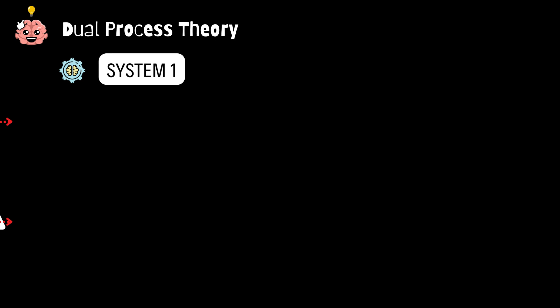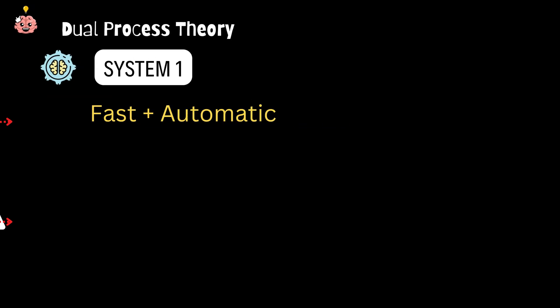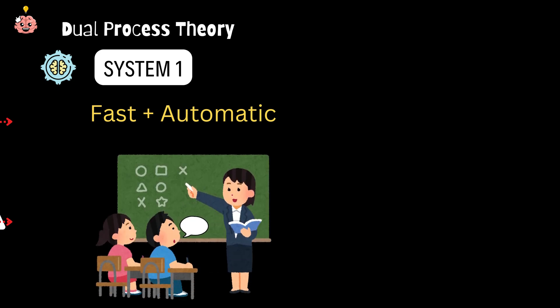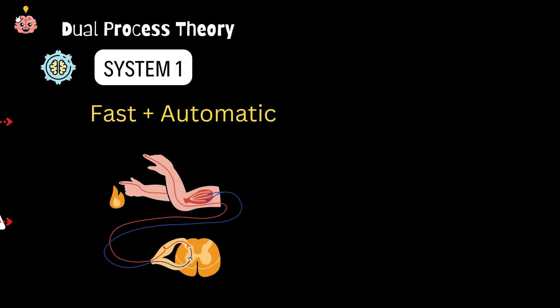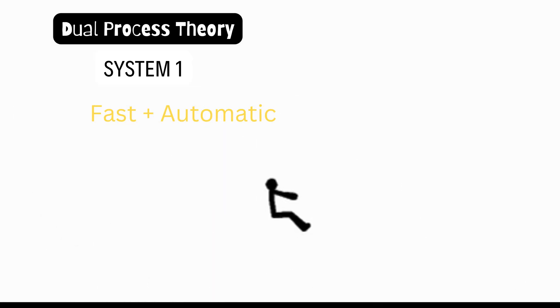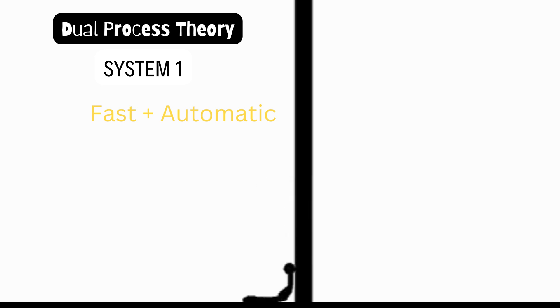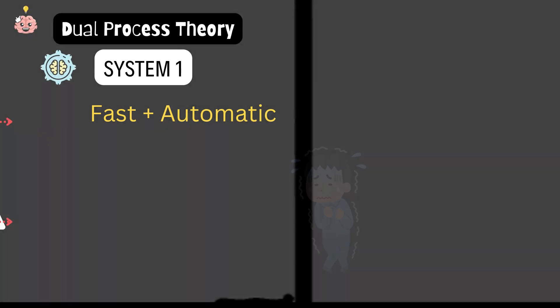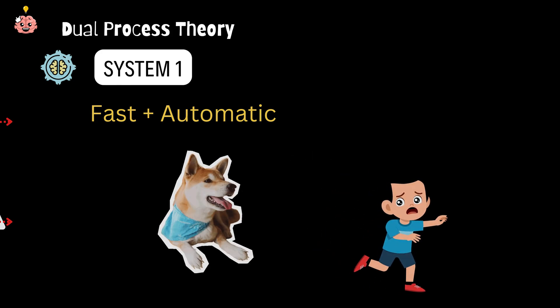System one is like your brain's autopilot, fast and automatic. Think of it as that impulsive friend who answers before the teacher even finishes the question. It works almost like a reflex. Remember when you slammed the brakes because a dog darted across the street? That's system one doing its thing, quick, unconscious, and requires zero effort.